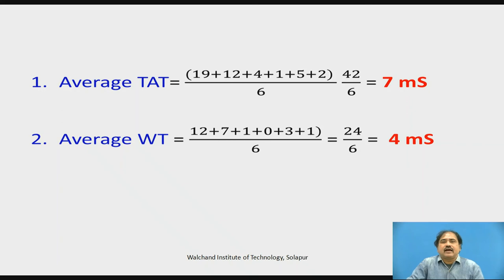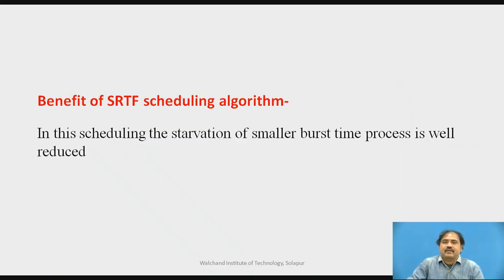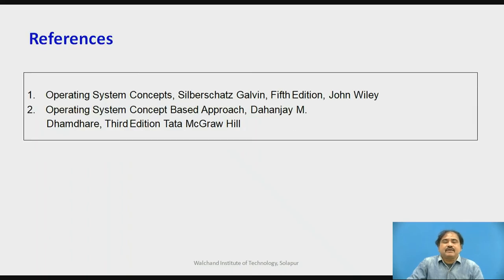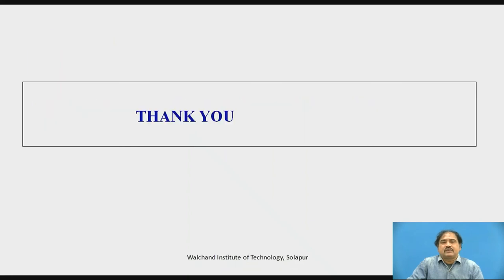The average Turnaround Time comes out to 7 milliseconds and the average Waiting Time is 4 time units. The biggest benefit of SRTF is that smaller processes do not have to wait long — they wait at most one time unit. This overcomes the severe problem of starvation, making SRTF very useful in practice. Thank you for watching this video; I hope it helped you understand the SRTF mechanism.